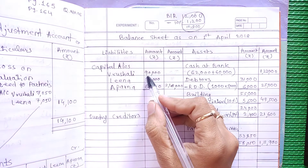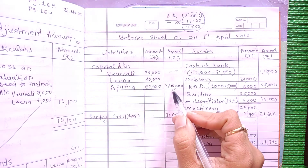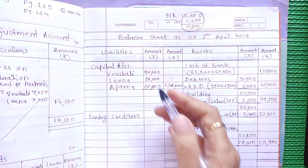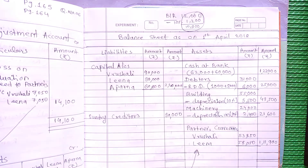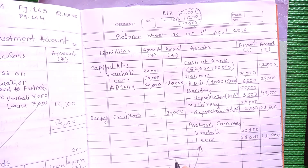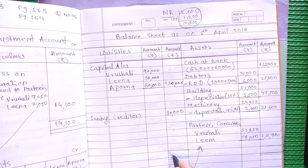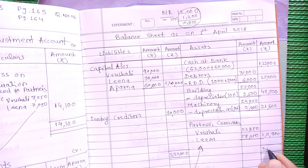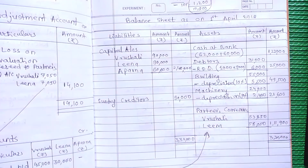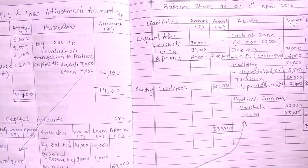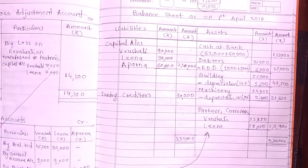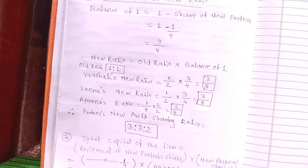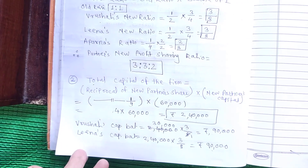Write Capital Accounts on the liability side totaling 2,40,000. Close and verify the balance sheet — both sides should total 3,30,000. Students, we have now completed the Profit and Loss Adjustment Account, Partners Capital Account, Partners Current Account, and the Balance Sheet of the new firm along with the new profit sharing ratio calculation.